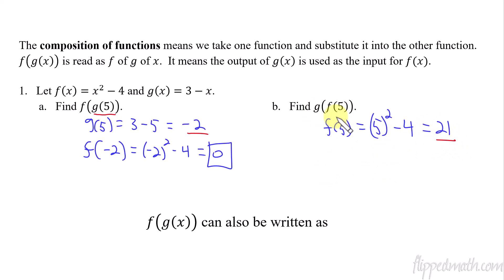And again, so the 21 is the same thing as f of 5. So the output of f of 5 is 21. So 21 becomes the input for the function g. So that's g of 21. And then that equals 3 minus 21, and that's negative 18. And there's my answer.